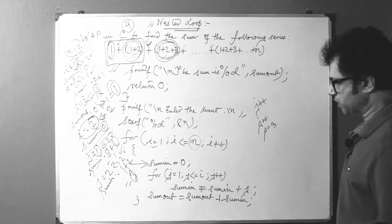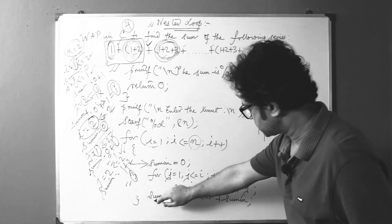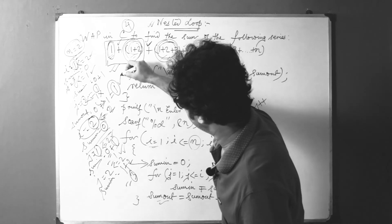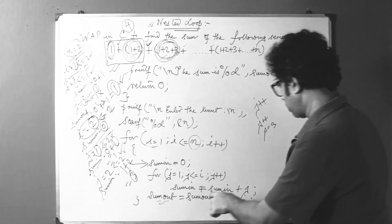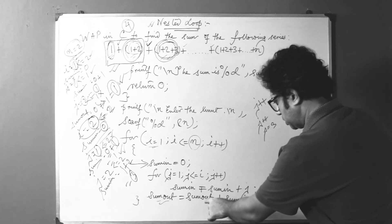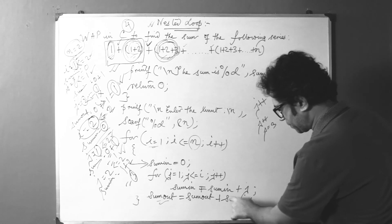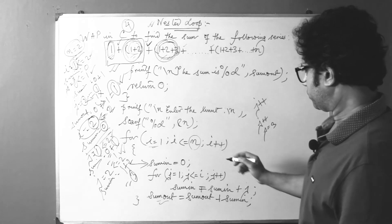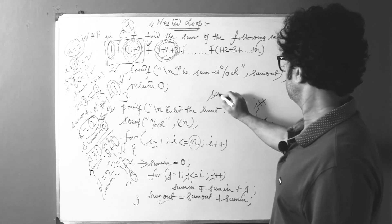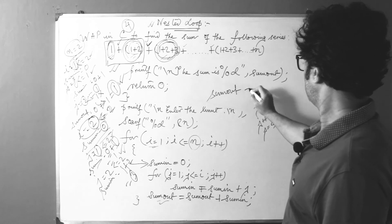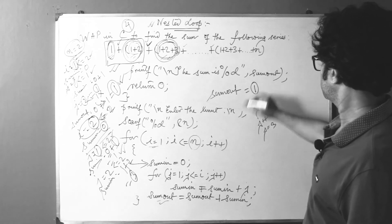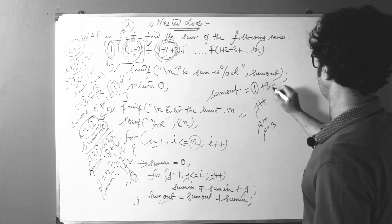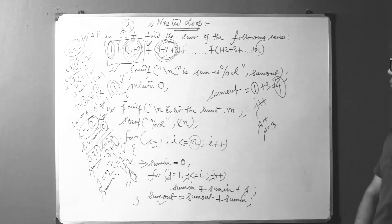Coming out of the j loop, we calculate sum_out again. sum_out was 1, and sum_in is now 3, so sum_out = 1 + 3 = 4.